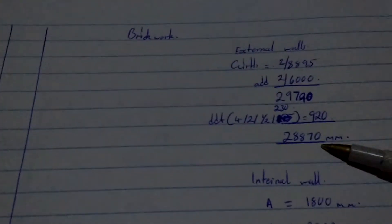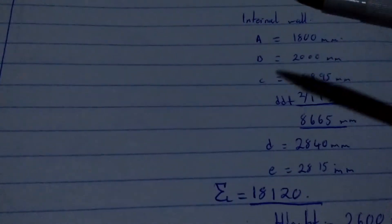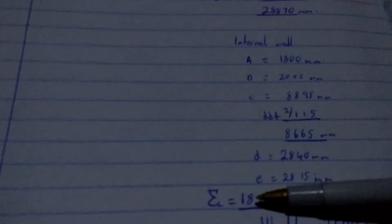And then we come to internal walls. So on our internal walls, we have wall A, B, C, D, E. So these walls are here.